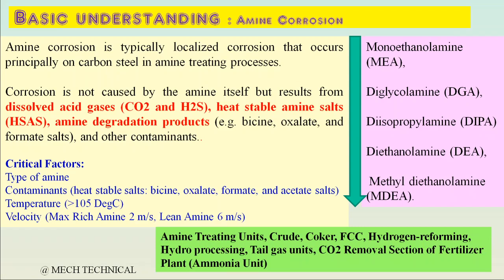The fourth and last critical factor is velocity. The velocity of the process stream in the Amine system for rich Amine should be a maximum of 2 meters per second for corrosion rates to remain in an acceptable range. If it exceeds 2 meters per second, there will be severe localized corrosion. For lean Amine, this limit is 6 meters per second, because lean Amine has fewer contaminants. Both limits apply for carbon steels.